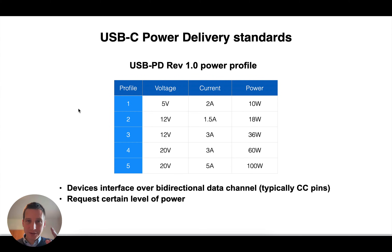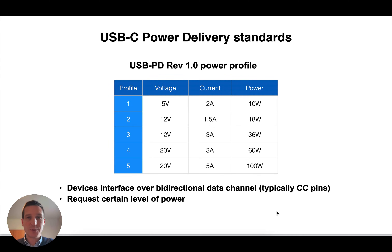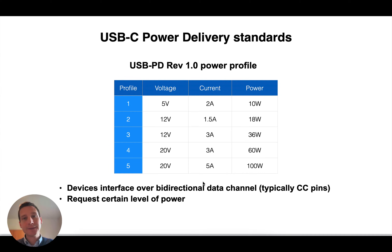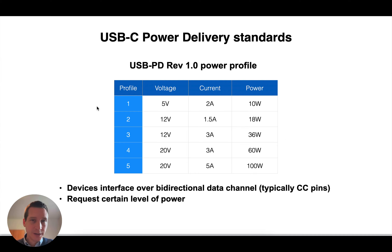The first power profile is a relatively simple one. There are five profiles — there's a sixth reserved one, but these are the five you will be using. Your device, typically over the CC pins — that's a bidirectional data channel — will communicate with the device that can deliver power, indicating how much it would like to take. The voltage can increase to 5, 12, or 20 volts. The current is drawn up to 1.5, 3, or even 5 amps. So there are profiles ranging from 10 watts all the way up to 100 watts. A laptop will communicate over its CC pins for profile 5, while a smartphone might request profile 2 or 3.